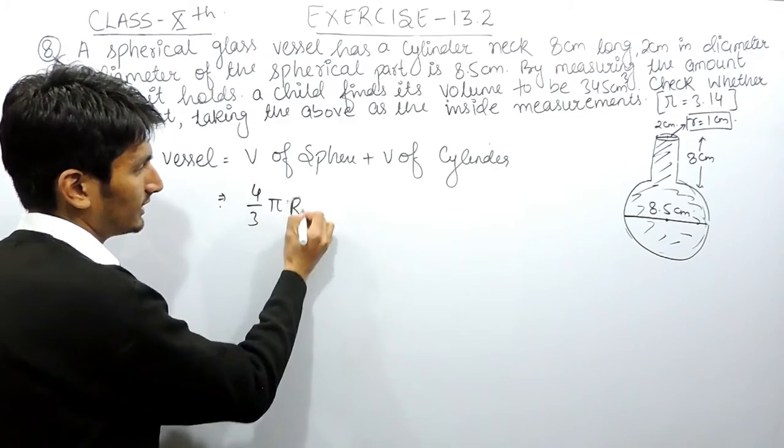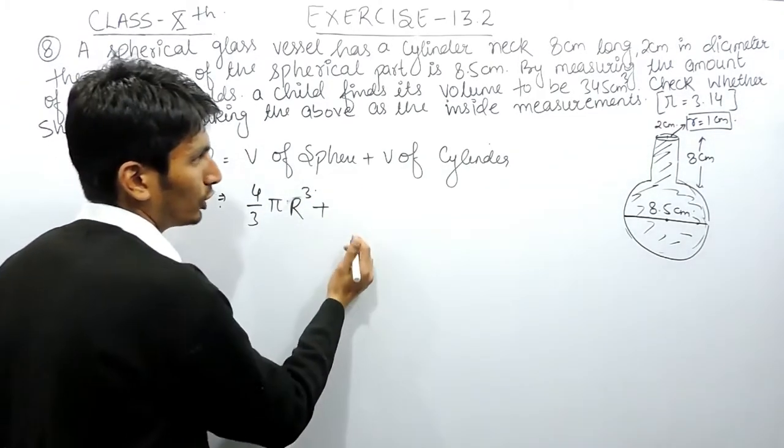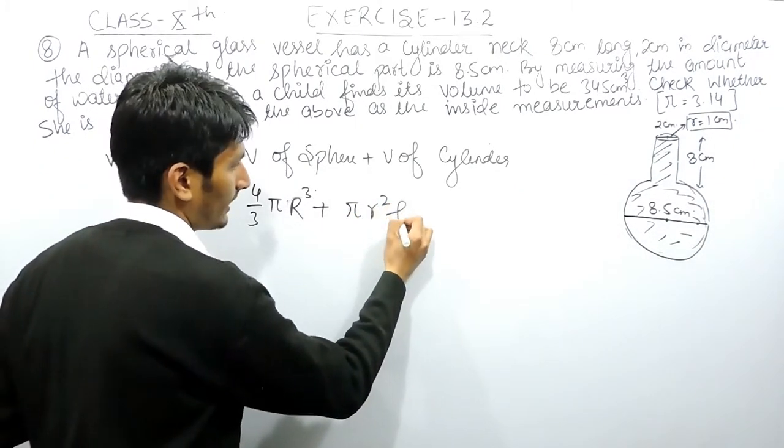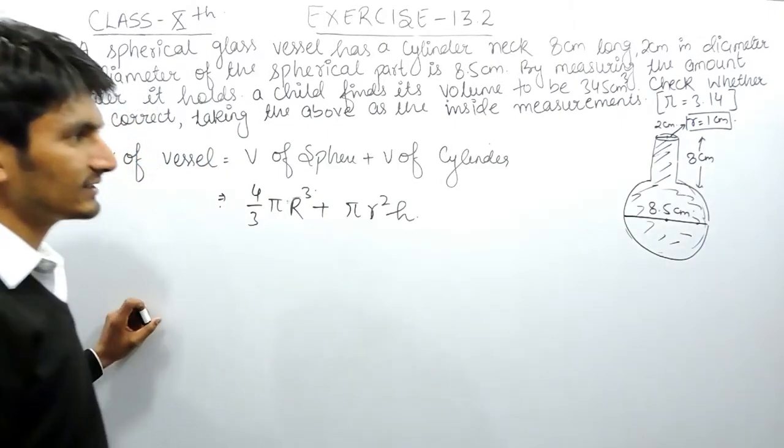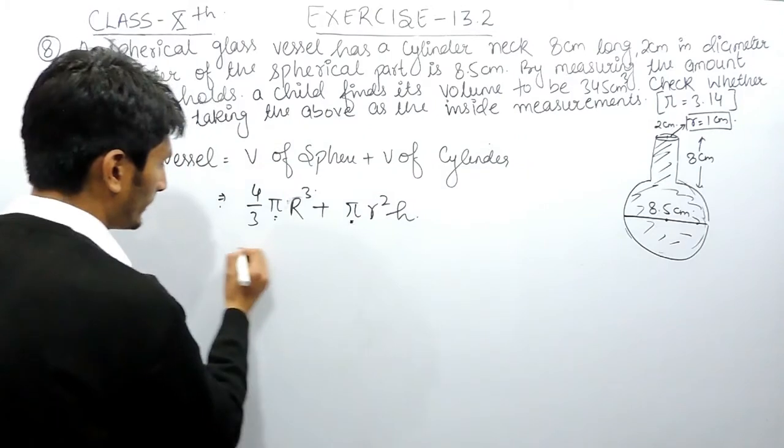Here the radius is bigger, consider the radius as R cube. Plus volume of the cylinder is pi r square h. Here the radius is small for the cylinder.